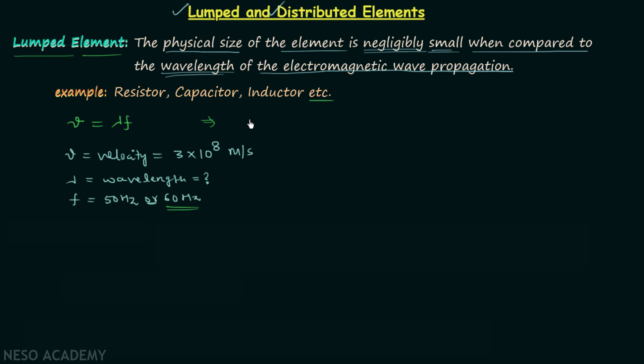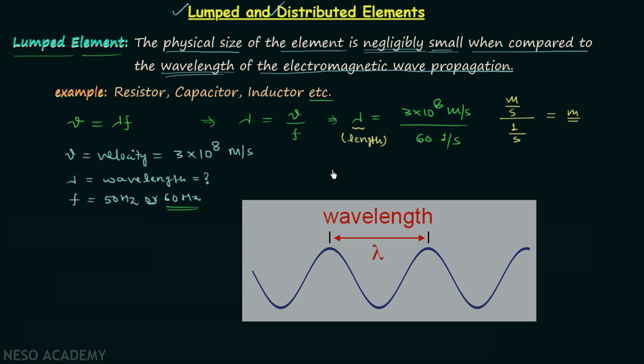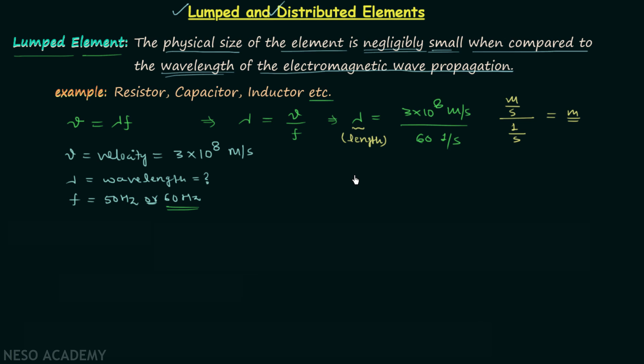From here we can say that the wavelength lambda is equal to velocity divided by the frequency, which is 3 × 10^8 meters per second divided by 60 Hz, or we can write 60 per second. When you focus on the unit, you will find we have meter per second divided by per second. When you simplify this you will get meter as the final unit. The wavelength is the length of the wave when measured from one peak to another peak, and as it is length it should have the unit as meter, which we are getting.